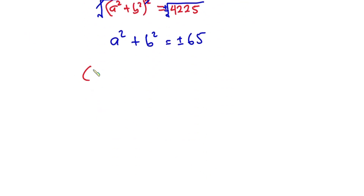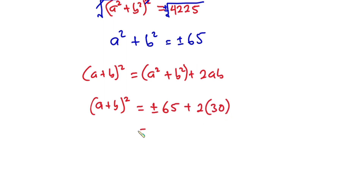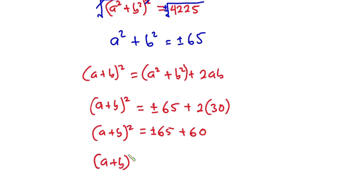Now remember, if we expand (a + b)², we get a² + b² + 2ab. We know the value of a² + b², which is ±65, so substituting we have (a + b)² = ±65 + 2 times 30, which gives us ±65 + 60.